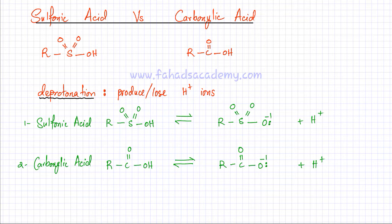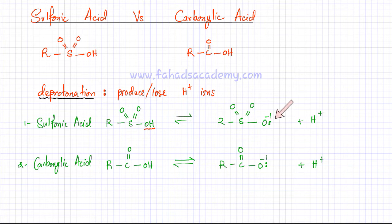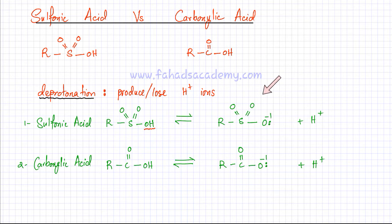For sulfonic acid, the OH group over here dissociates and it ends up producing an H⁺ ion and an oxygen with a negative charge, which also has lone pairs. So this anion is produced and this H⁺ ion is produced when a sulfonic acid molecule ionizes.